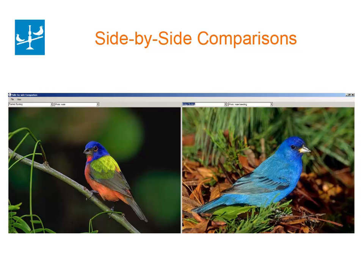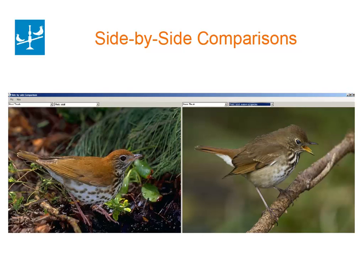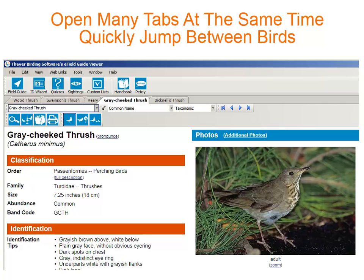In version 7, use the side-by-side comparison feature to compare two birds — birds of the same species or similar birds. You can even open many tabs at the same time and study the birds of a specific family.